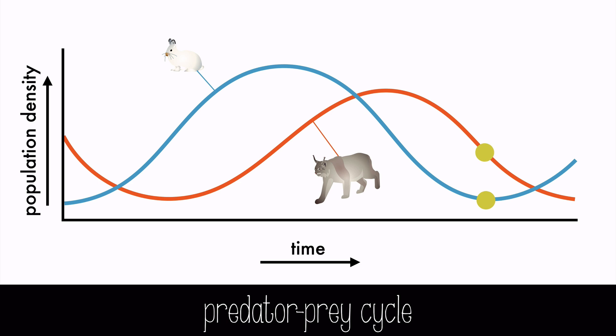But as the prey begin to grow their population once more, the predators will also increase their population. It's a cyclic pattern.